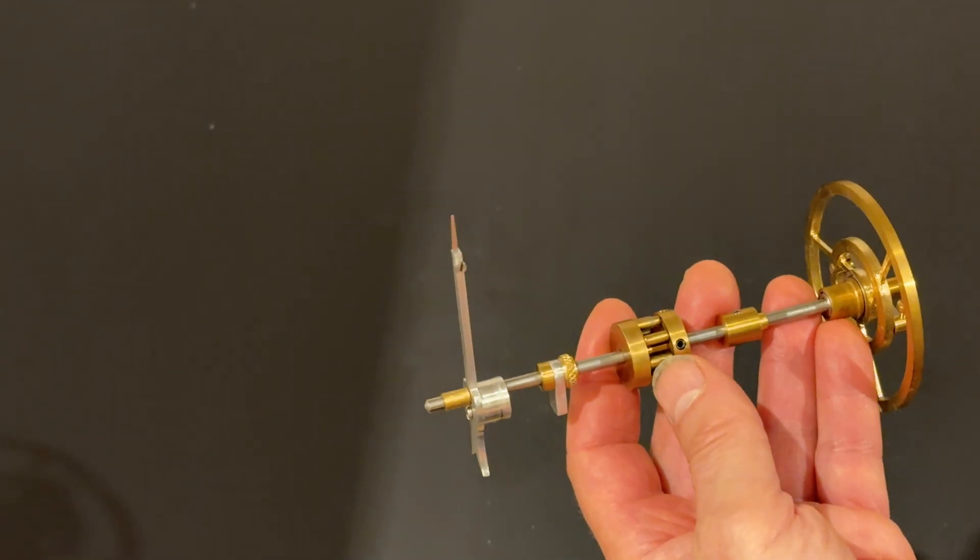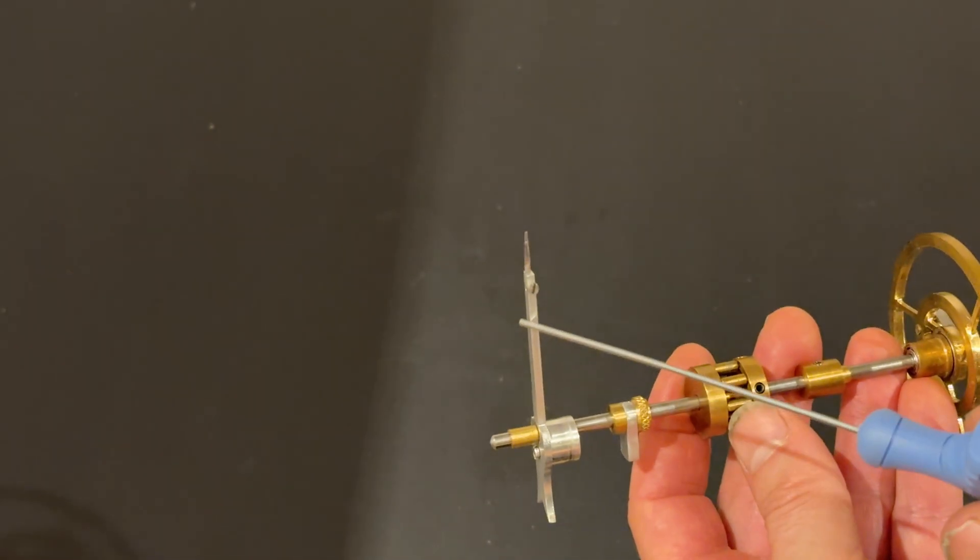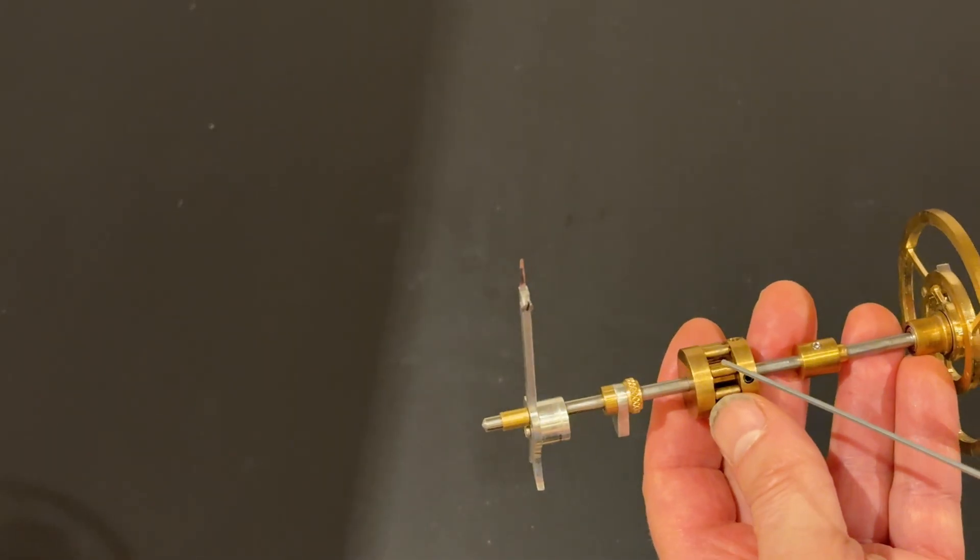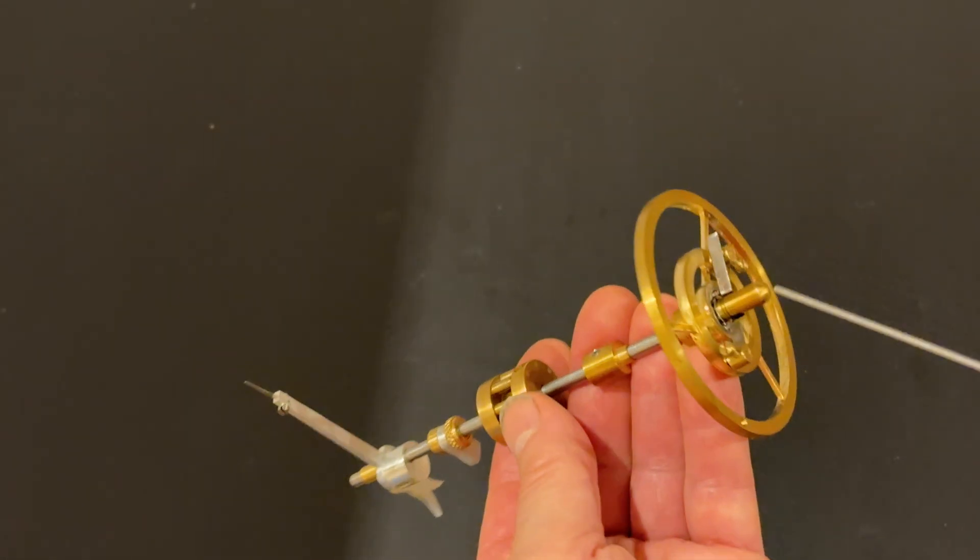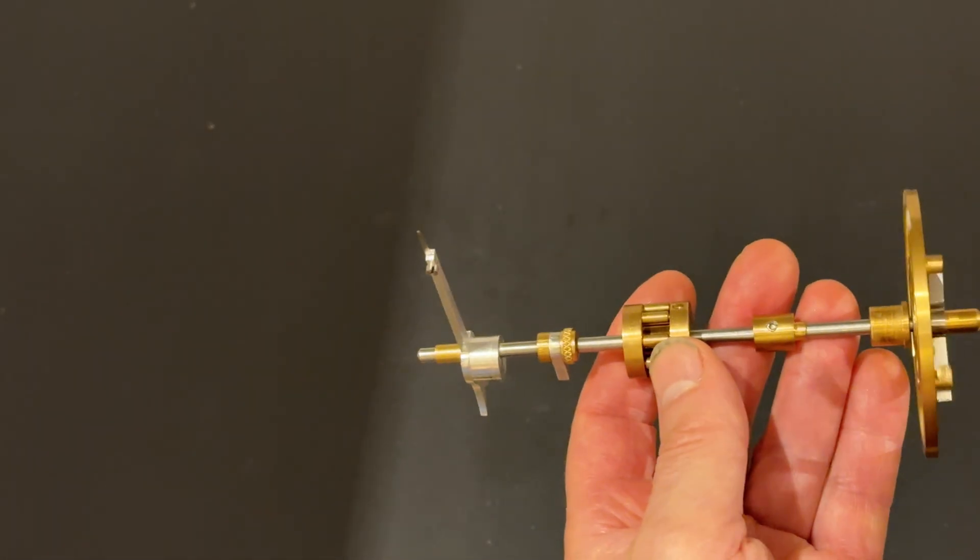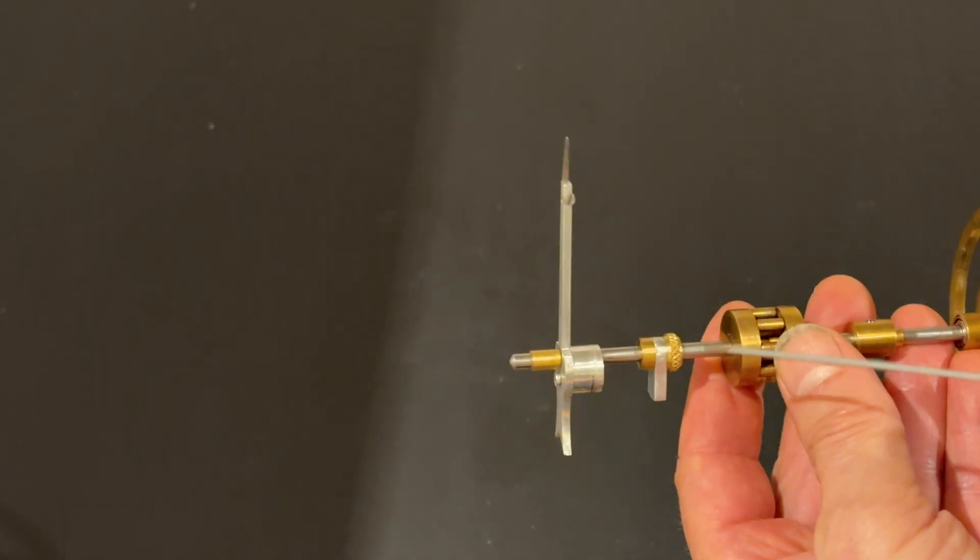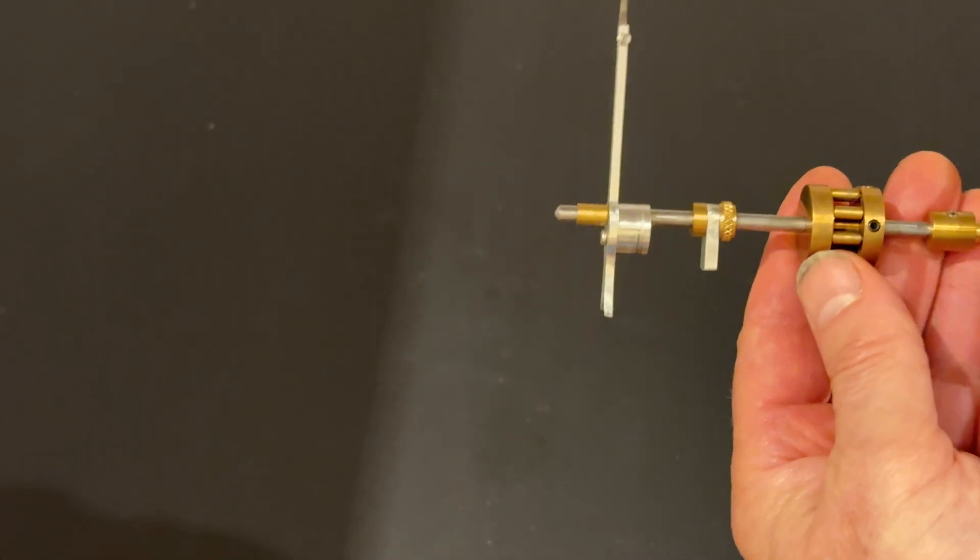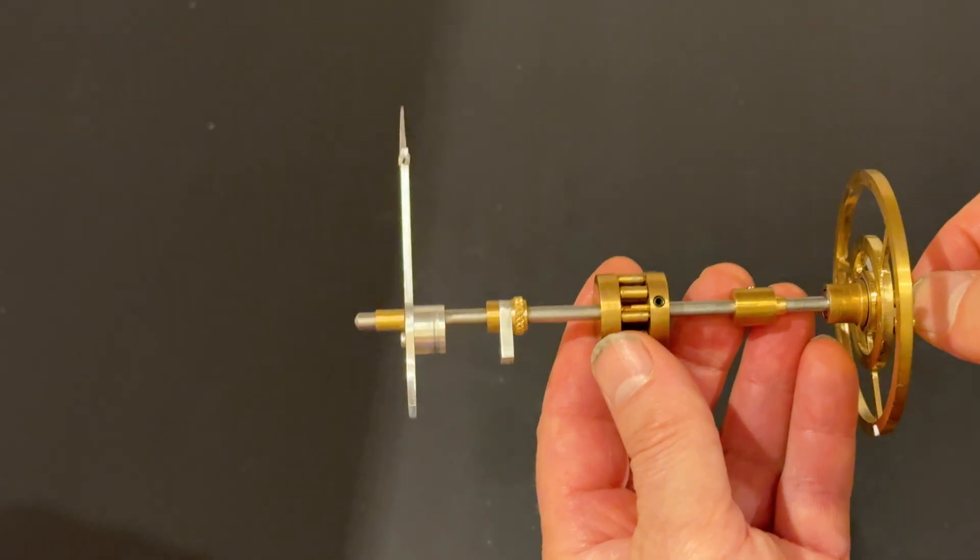So this is the setup for the remontoir. You've got a locking arm, a roller pinion and an inertial flywheel and a balancing element here. It's quite important to have this thing pretty well balanced.